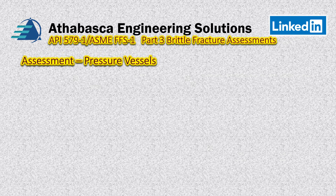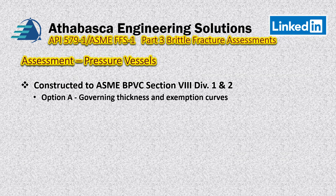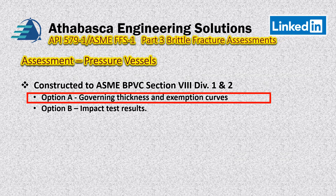For a level two assessment, we're going to find that there's a lot of level one involved, because level two builds from level one and level three builds from level two and one. It reminds us that the vessel must be constructed to section eight, division one or two. Option A is governing thickness and exemption curves, and option B is if we have impact test results. In our example we're going to focus on option A, as it's the most technical.